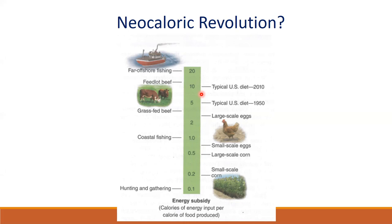Comparing our current system to how humans gathered food for hundreds of thousands of years — through hunting and gathering — it took about 0.1 calories of energy to get a calorie of food. That made sense because we had more energy to survive than we were expending hunting. Small-scale farming sits in between. Where we are today has been made possible by the Green Revolution.